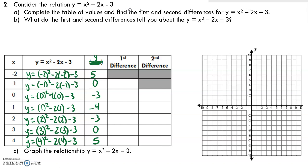For example, when x equals 3, you could write 3 squared as 9 minus 6 minus 3, which makes it clear you get 0. Now let's calculate the first differences — always the later one minus the previous one. 0 minus 5 is negative 5. Negative 3 minus 0 is negative 3. Negative 4 minus negative 3 is negative 1. Negative 3 minus negative 4 is like negative 3 plus 4, which is positive 1. 0 minus negative 3 is positive 3. And 5 minus 0 is clearly 5.